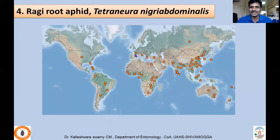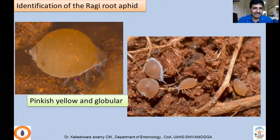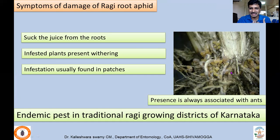The next pest is ragi root aphid, Tetraneura nigriabdominalis. Unlike most aphids found on foliage, this pest is adapted to the root zone where it sucks sap from the roots. Above-ground symptoms include wilting and drying. This insect is distributed worldwide wherever millets are grown. For identification, ragi root aphids are globular and comparatively thick. Large numbers of nymphs and adults accumulate in the root zone, sucking the plant juices.